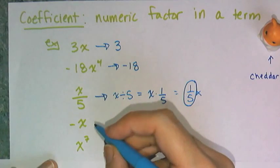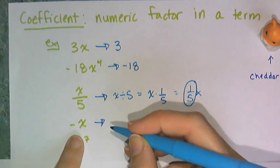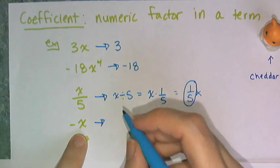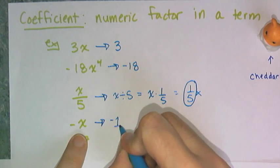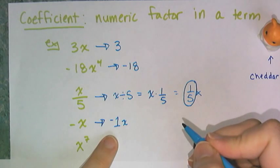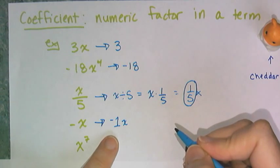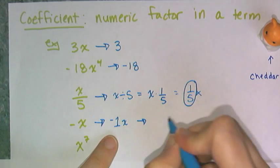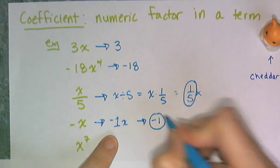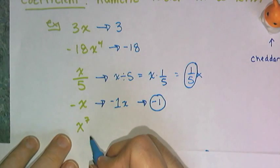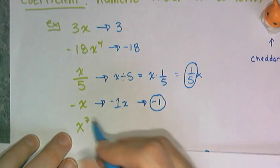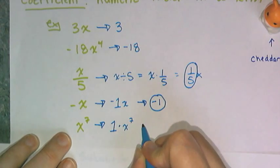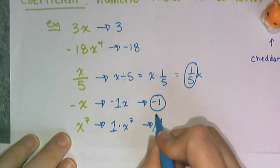Here are the other two tricky ones. I don't see a number in front of this, I just see the negative symbol. What this means is that I have negative one X, but no one ever writes the one when it's multiplication, it's unnecessary. So this one's coefficient is negative one. And if you don't see any number at all, no symbol or anything, it's the same deal. There is a one times X to the seventh, so its coefficient is one.